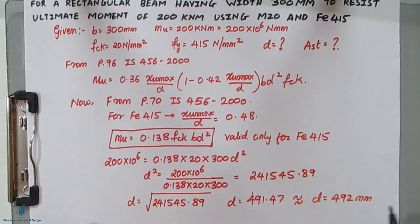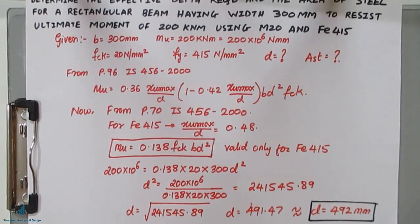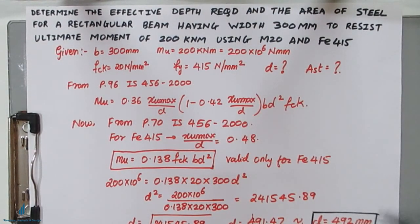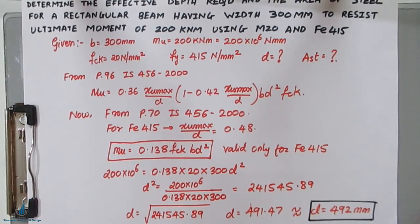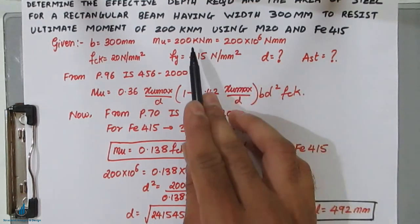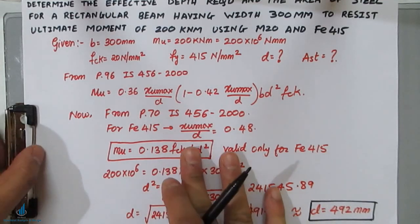Rounding up, d ≈ 492 mm. This means an effective depth of 492 mm is required to resist the ultimate moment of 200 kN·m. This completes the first part of the problem. Now we need to find the area of steel.